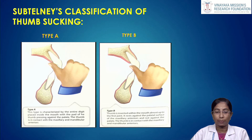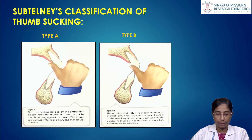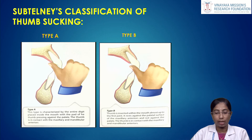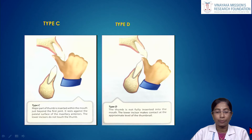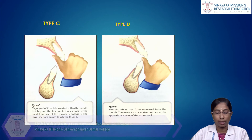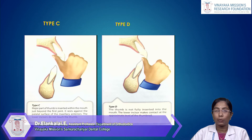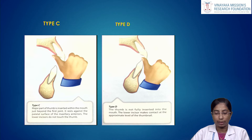The Subtelny classification of thumb sucking includes four types. Type A: the entire digit is placed inside the mouth with the pad of the thumb pressing against the palate, in contact with both maxillary and mandibular anteriors. Type B: the digit is inserted almost up to the first joint and rests against the palatal surface of maxillary anteriors, and the lower incisors do not touch the thumb. Type D: the thumb is not fully inserted; the lower incisors make contact at approximately the level of the thumbnail.